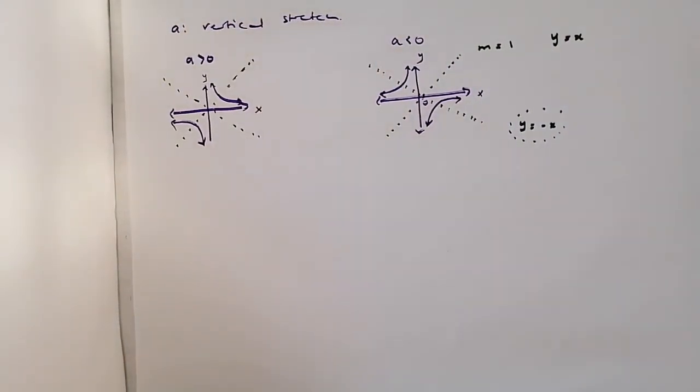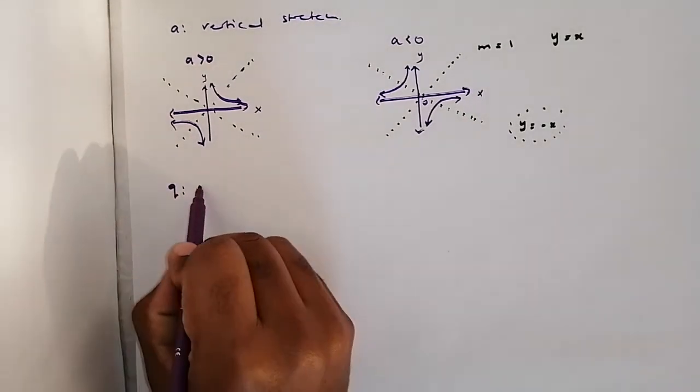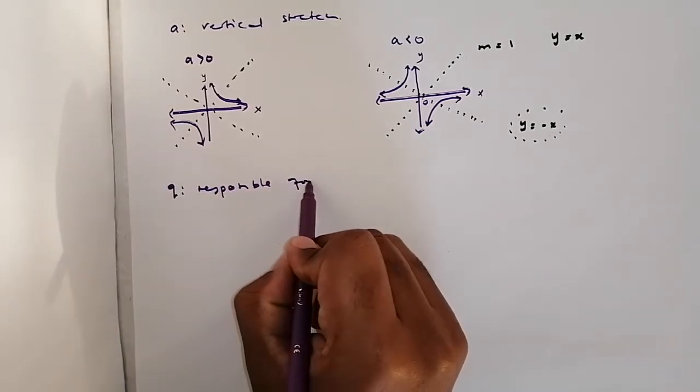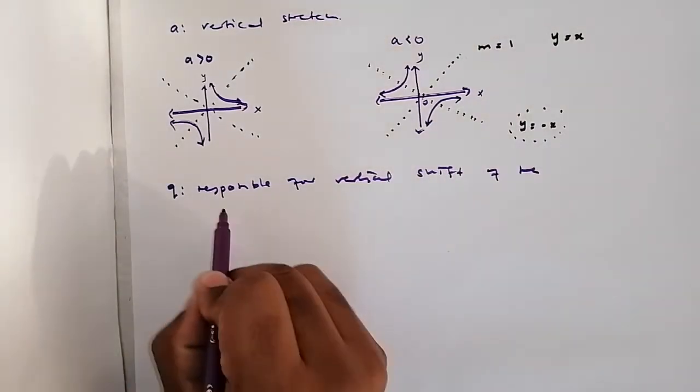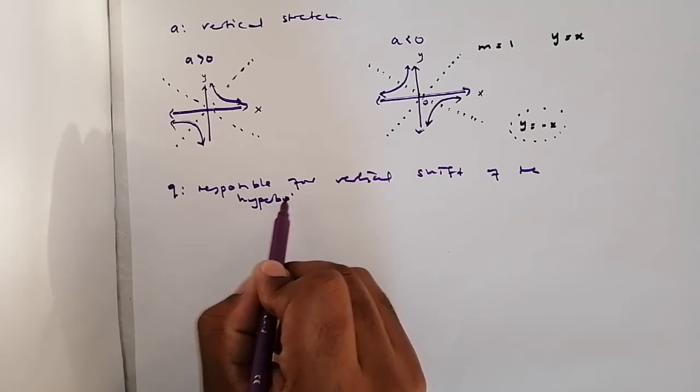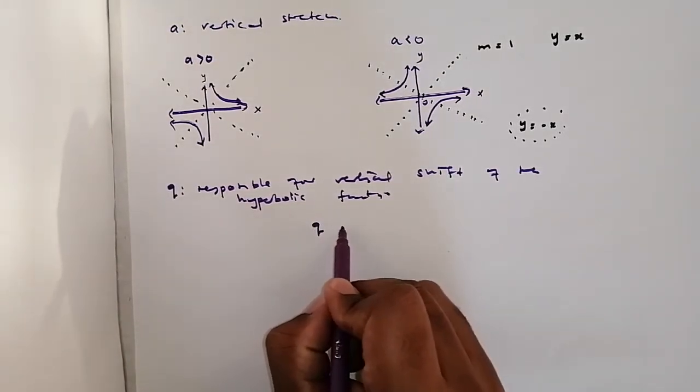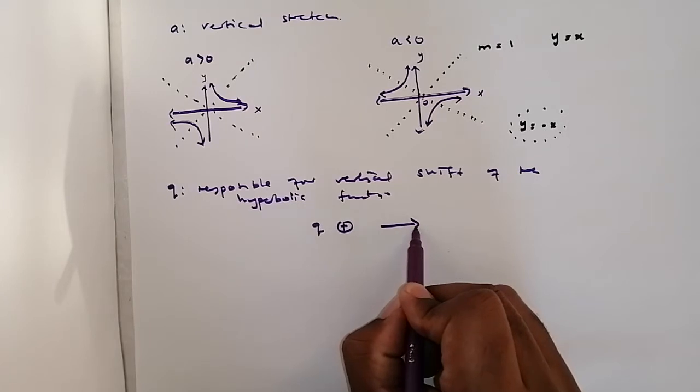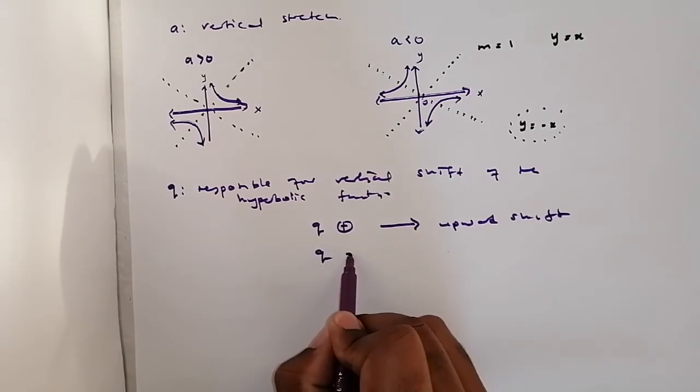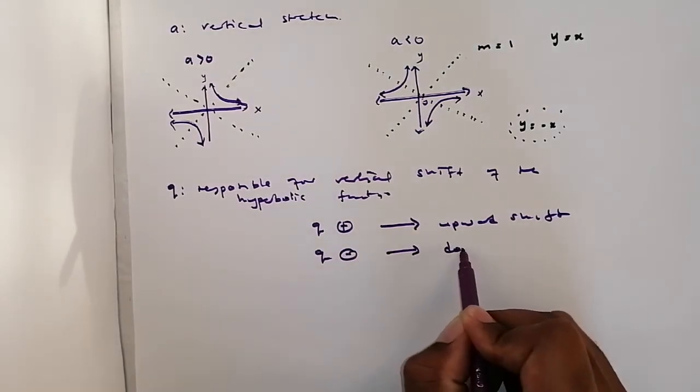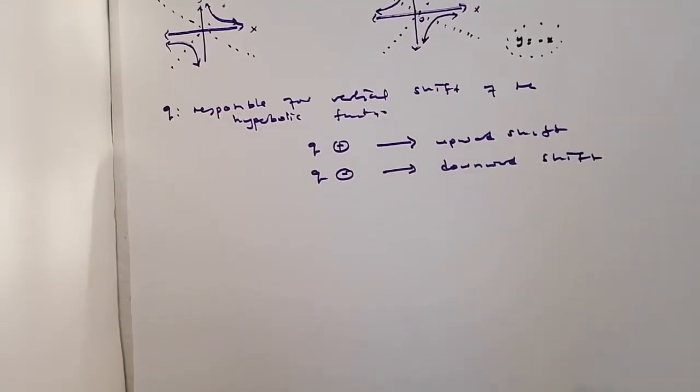Speaking about shiftings, let me introduce you guys to Q. Q is responsible for the vertical shift of the hyperbolic graph or function, such that if Q is positive, this will result into an upward shift. And then if Q is negative, this will result into a downward shift.